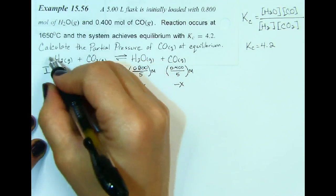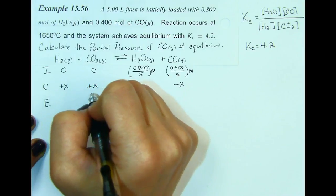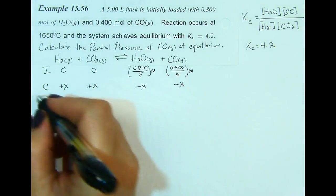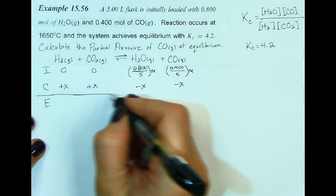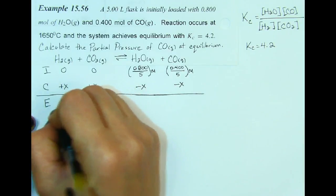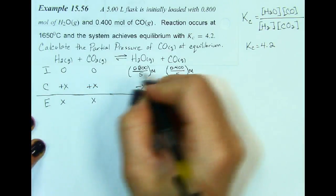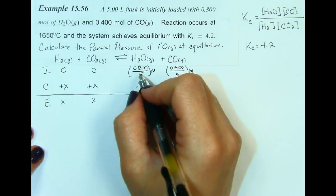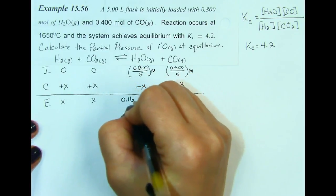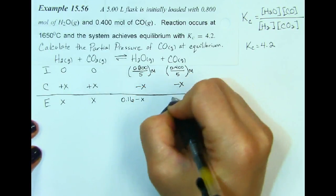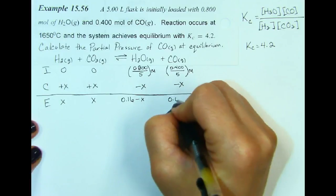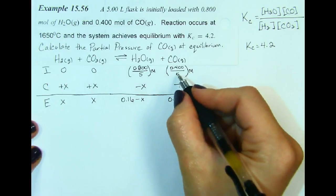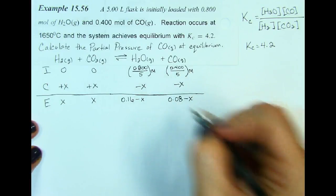Positive because these are what is appearing and these are what are disappearing. At equilibrium we have x and x. When I do the math, I get 0.16 minus x and 0.08 minus x.